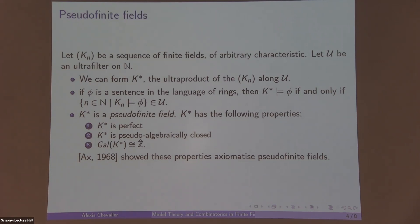Okay, so this is very much the kind of classical algebraic side of the model theory of finite fields. And now we're going to look at some slightly more recent things which are more on the combinatorial side.